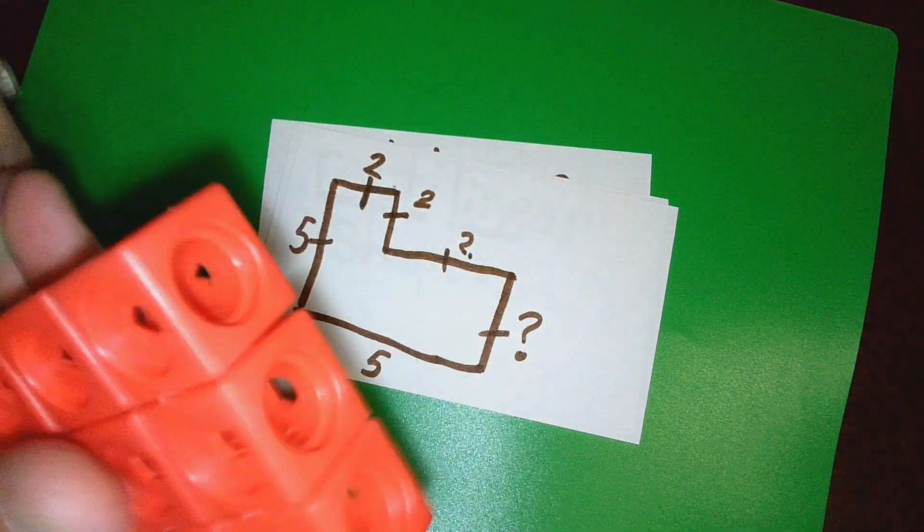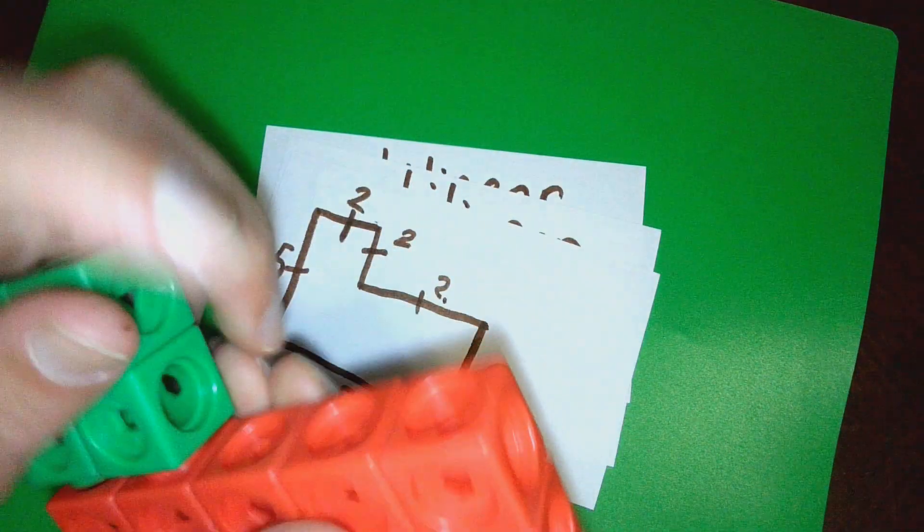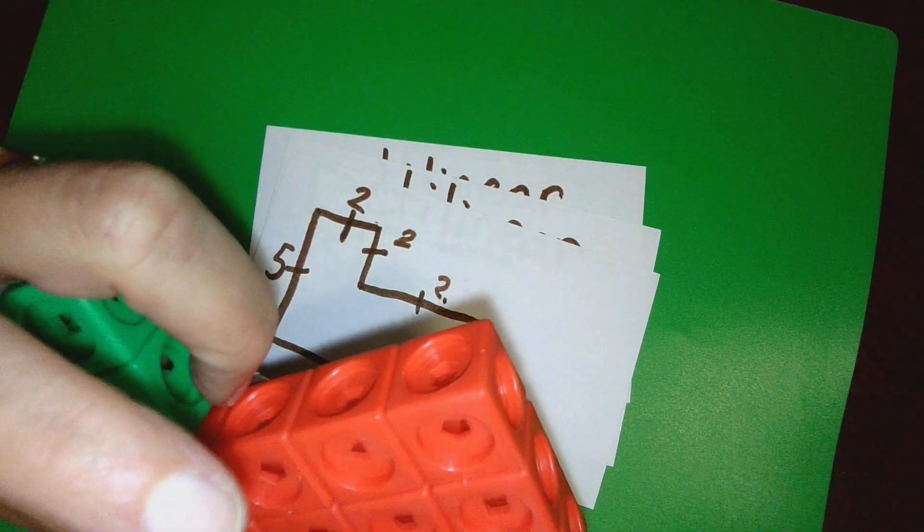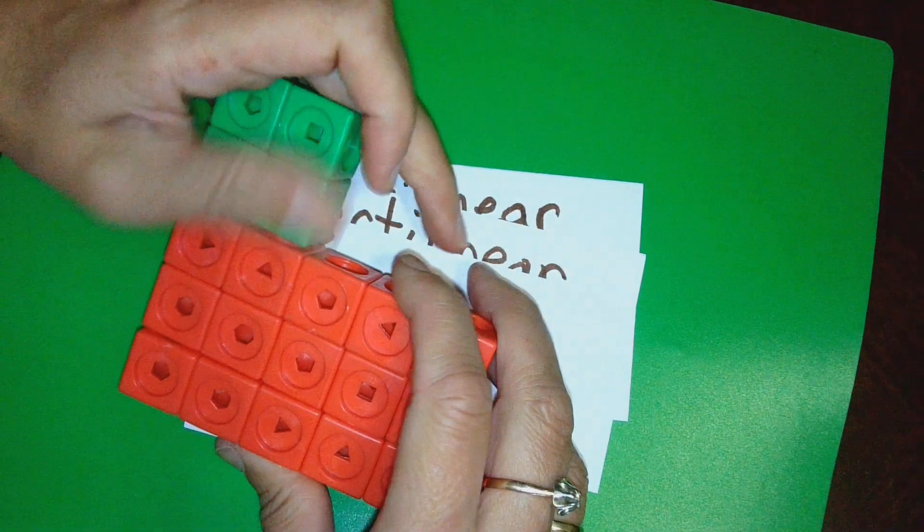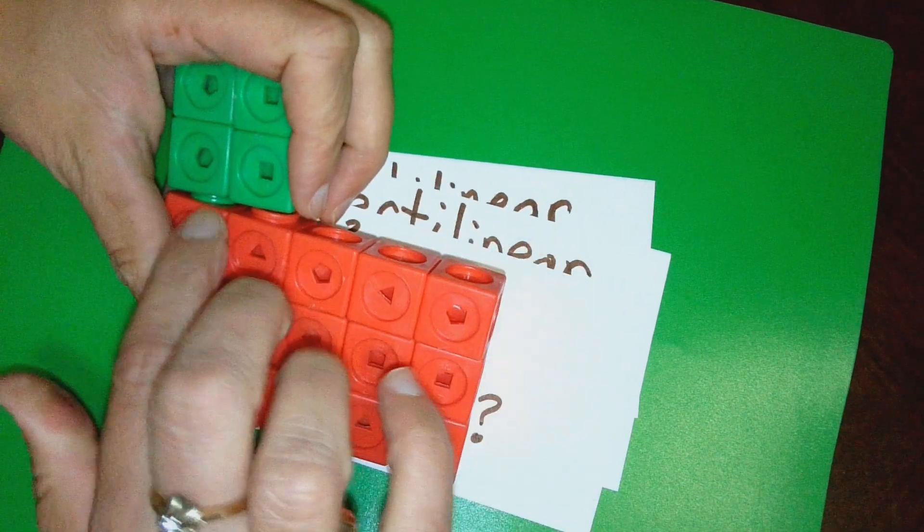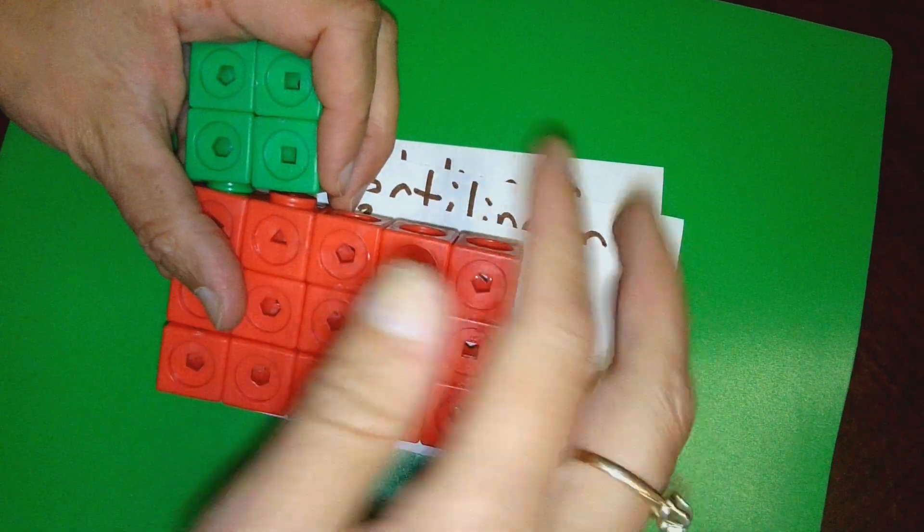So if you know that this is 5, and you know that this part covers up 2, then that means the uncovered part has to be what? 2 plus 2 plus what equals 5? It's 3.